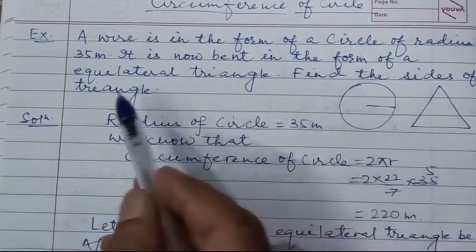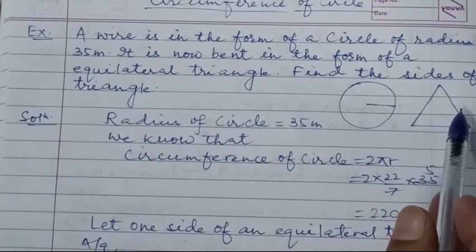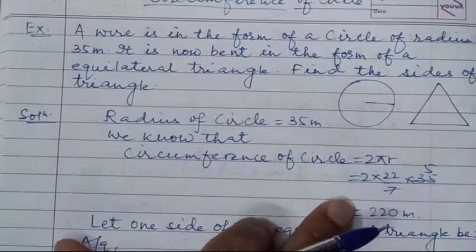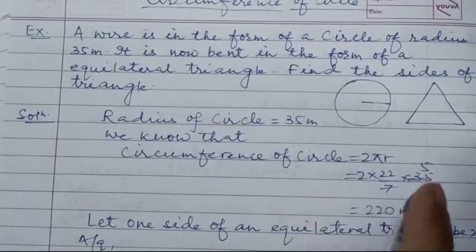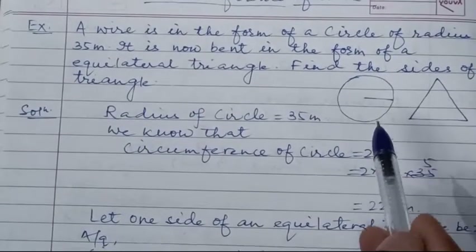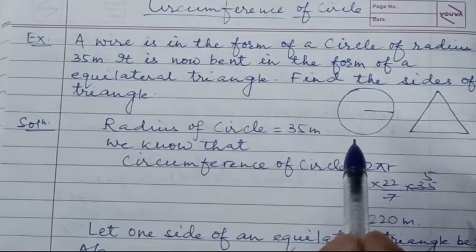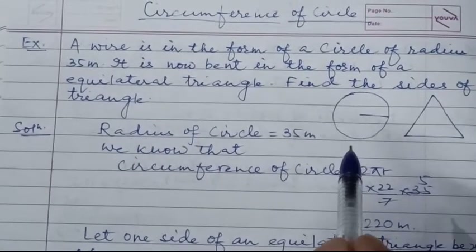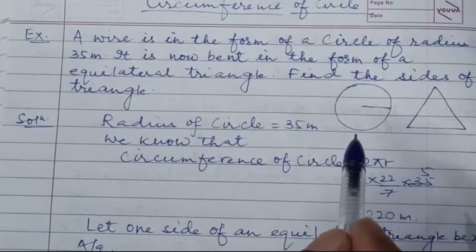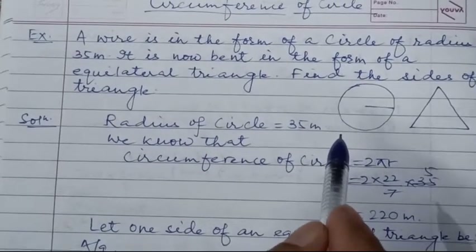We need to find the length of each side of the equilateral triangle. The wire is the same, so we need to consider the length of the wire. Length of wire means circumference of the circle.